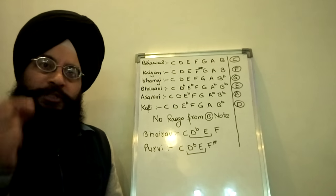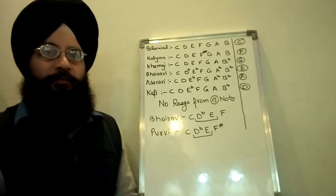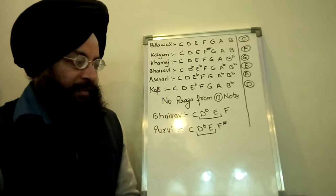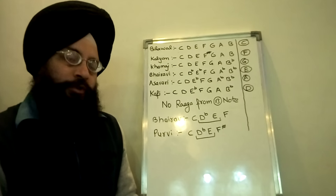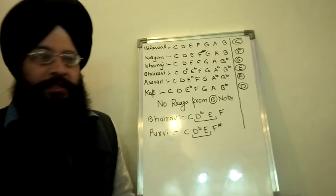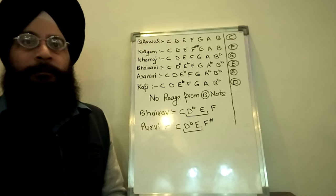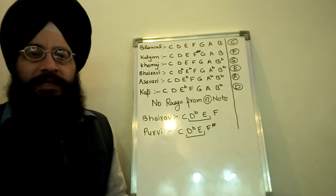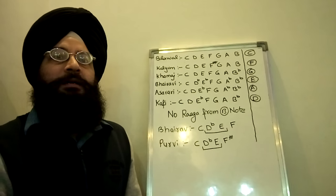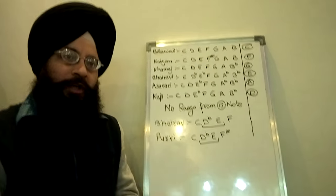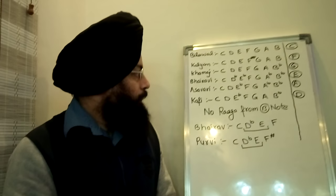So from which note should we start the song so that there are no slider movements. According to Indian classical theory, we all know that there are 12 notes — 7 shuddha svars, 4 komal svars and 1 tivra svar. And according to Bhatkhande's That paddhati, all the ragas in Indian classical music are categorized into 10 main thats, and basically all ragas fall into any one of those 10 thats.